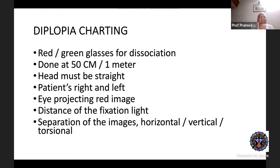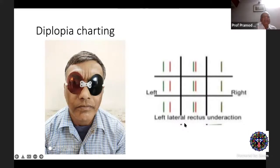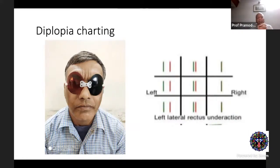Diplopia charting is a subjective test based on diplopia principles. The patient wears red and green glasses for dissociation, tested at 50 centimeters or 1 meter — not 33 cm, to avoid near vision complex. The head must be straight, and the patient's right and left, which eye projects the red image, and the fixation distance must all be indicated on the chart. Horizontal, vertical, and torsional separation of images must be documented in centimeters so that serial recordings can be compared over time.